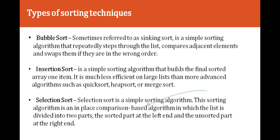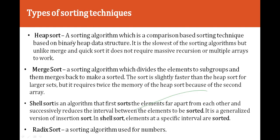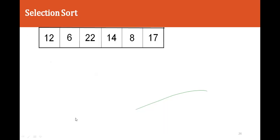Selection sort is a simple comparison-based algorithm in which the list is divided into two parts: the sorted part on the left and the unsorted part on the right. Heap sort is a comparison-based sorting technique. Merge sort applies divide and conquer — dividing into subgroups and merging back to make a sorted result. Shell sort first sorts elements far apart from each other, then reduces the interval between elements to be sorted. Radix sort is a sorting algorithm used for numbers.